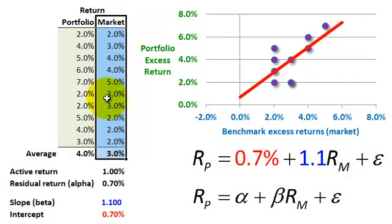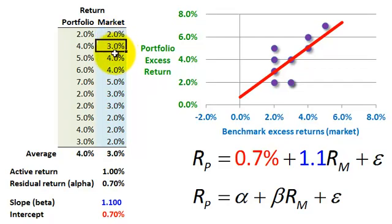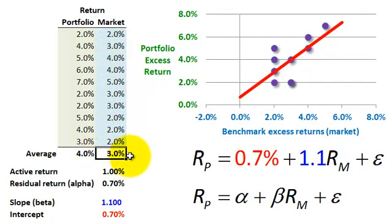Here's the single-factor part. Our benchmark, to keep it simple, is the overall market — think S&P 500 or S&P 1500 for that matter. Our market excess returns, by design, average 3%. And that's our benchmark.